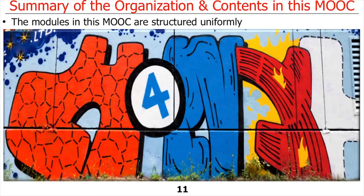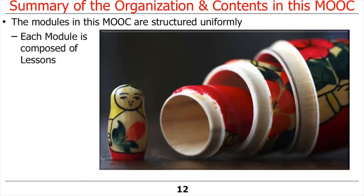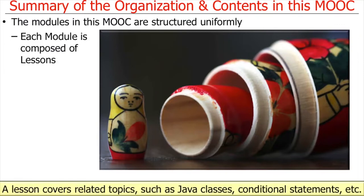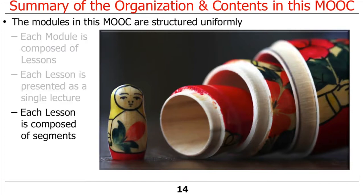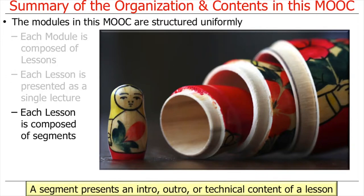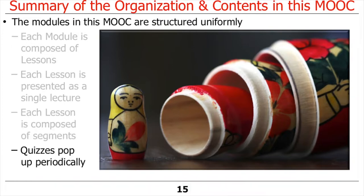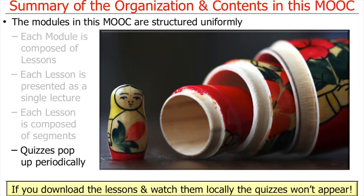The modules in this MOOC are structured uniformly. Each module is composed of multiple lessons covering related topics such as Java classes, conditional statements, or the Android Studio app wizard. Each lesson is presented as a single lecture composed of segments, including intros and outros that summarize learning objectives, and segments presenting technical content. In-video quizzes periodically pop up to check if you've mastered the material. If you download videos and watch them locally, these quizzes won't appear, but some questions may show up on the weekly stand-alone quizzes.